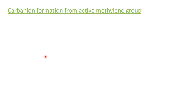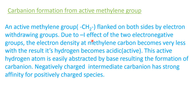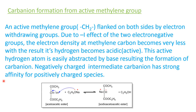Carbon ion formation from active methylene group: the active methylene group is flanked on both sides by electron withdrawing groups. Due to the minus I effect of two electronegative groups, the electron density at the methylene carbon becomes very less. As a result, its hydrogen becomes acidic or active. This active hydrogen atom is easily abstracted by base, resulting in the formation of carbon ion. The negatively charged intermediate carbon ion has strong affinity for positively charged species. So the base can easily take the proton from active methylene group and can form the carbon ion.